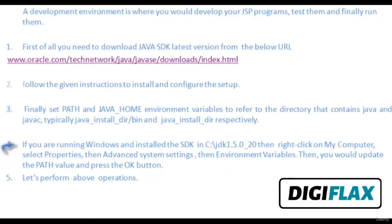If you are running Windows and installed the SDK in C:/JDK1.5.0_2.0, then right-click on My Computer, select Properties, then Advanced System Settings, then Environment Variables. Then you would update the PATH value and press the OK button. Let us perform the above operations.